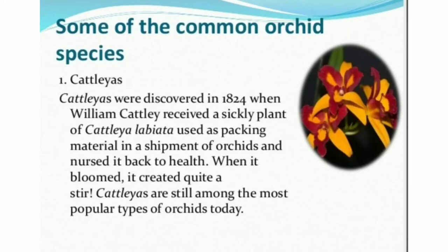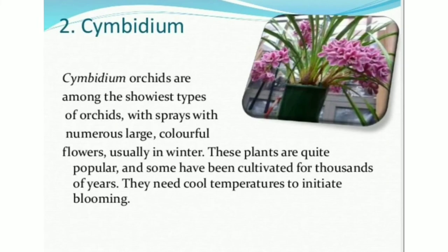Some of the common orchid species — Cattleyas: Cattleyas were discovered in 1824 when William Cattley received a sickly plant of Cattleya labiata used as packing material in a shipment of orchids and nursed it back to health. When it bloomed, it created quite a stir. Cattleyas are still among the most popular types of orchids today. Cymbidium orchids are among the showiest types, with sprays of numerous large colorful flowers usually in winter. These plants have been cultivated for thousands of years and need cool temperatures to initiate blooming.